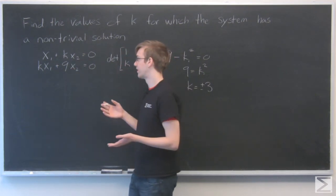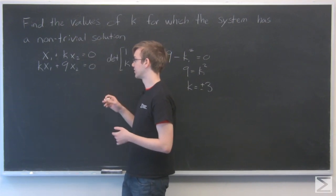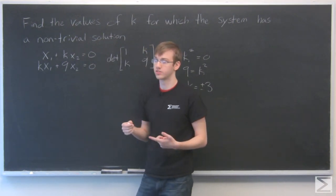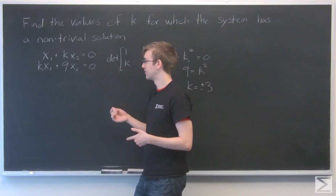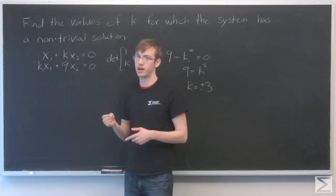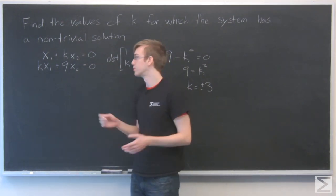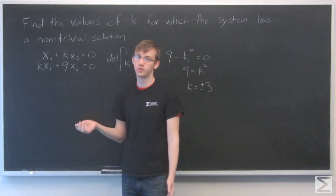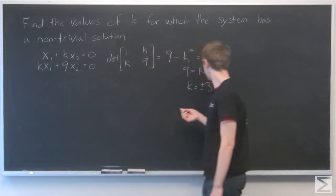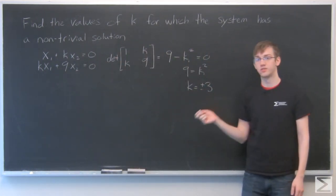And because there are multiples of each other, we can have multiple values of x1 and x2, as opposed to other values of k for which we would have a trivial solution. And a trivial solution is just where x1 and x2 are both equal to 0. So our solution is k equals plus or minus 3.